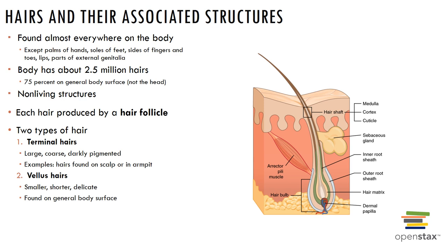Hair contains dead keratinized cells with hard keratin, which is more durable than the soft keratin found in our skin. Hair pigments result from melanins; gray and white hair is where we have decreased melanin production and also increased air bubbles in the shaft. There are two types of hair: terminal hairs, which are large, coarse, and darkly pigmented, found on the scalp and armpits, and vellus hairs, which are small, shorter, and delicate, found on the general body surface.